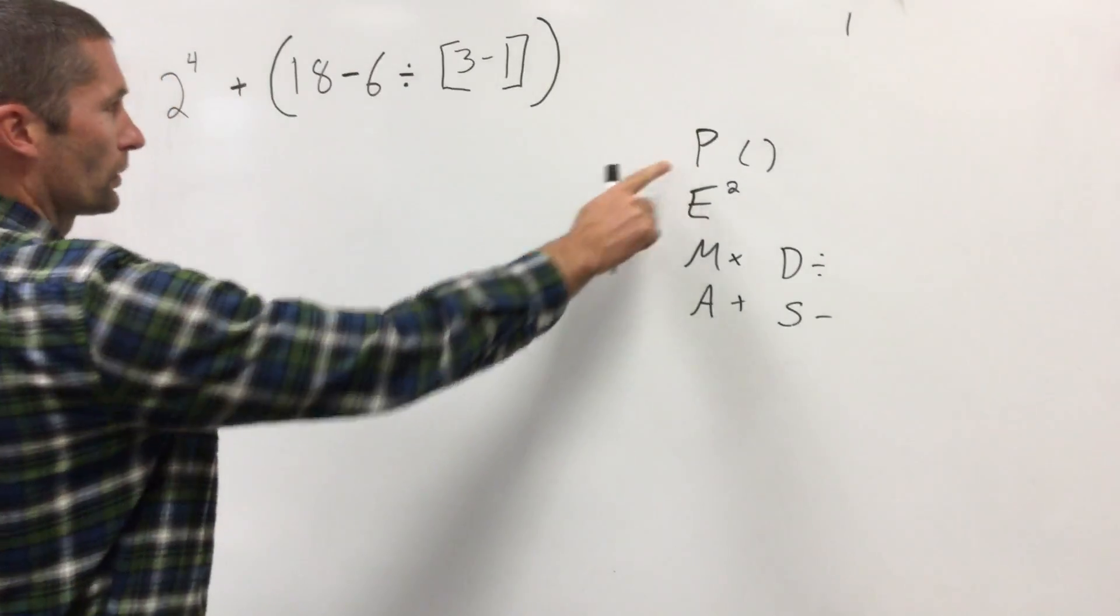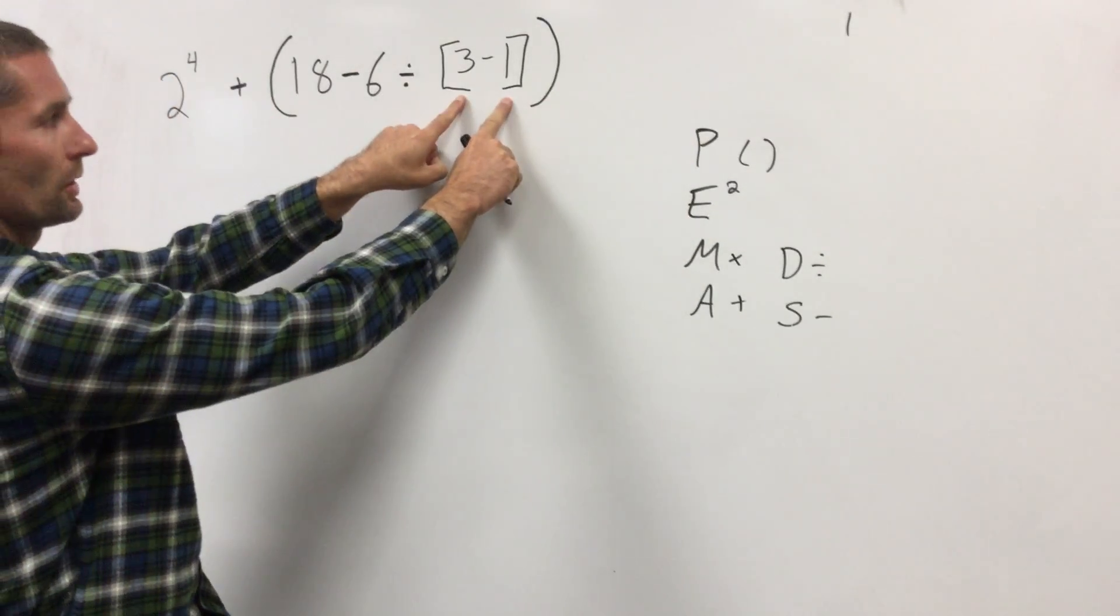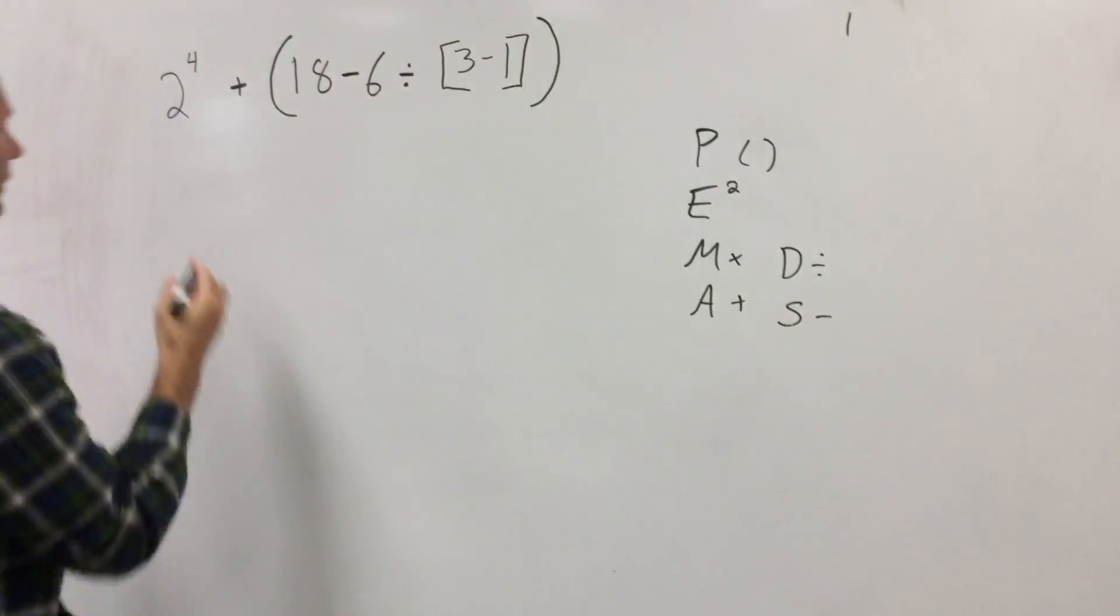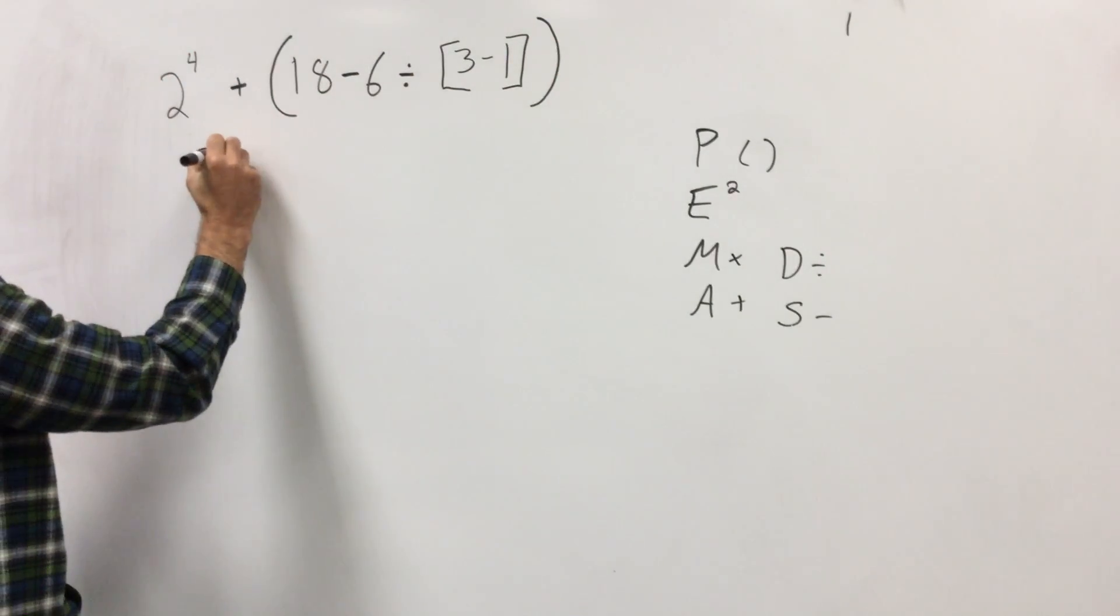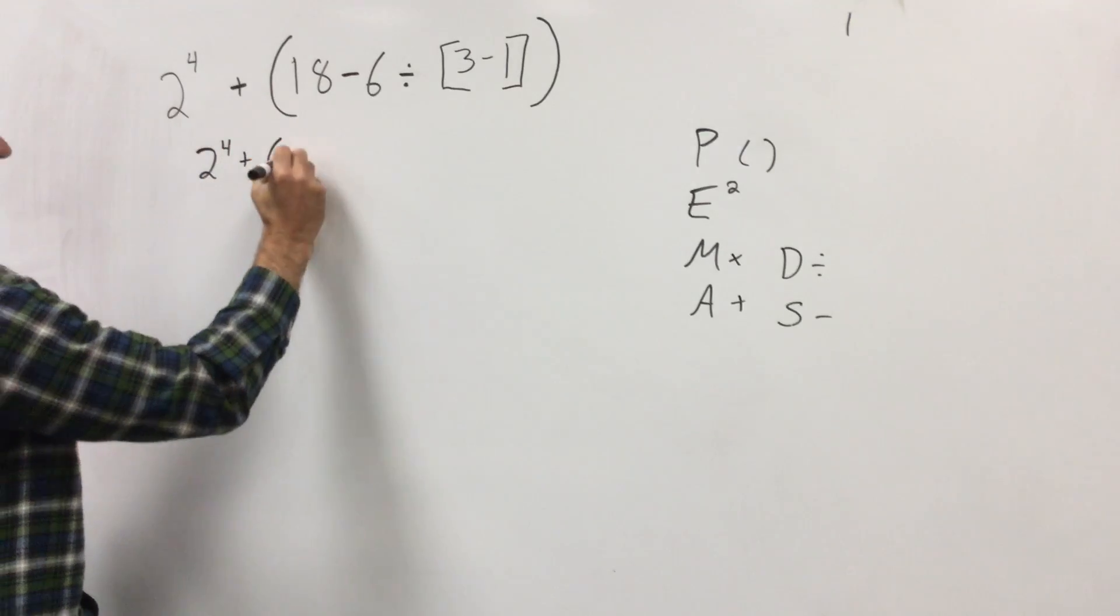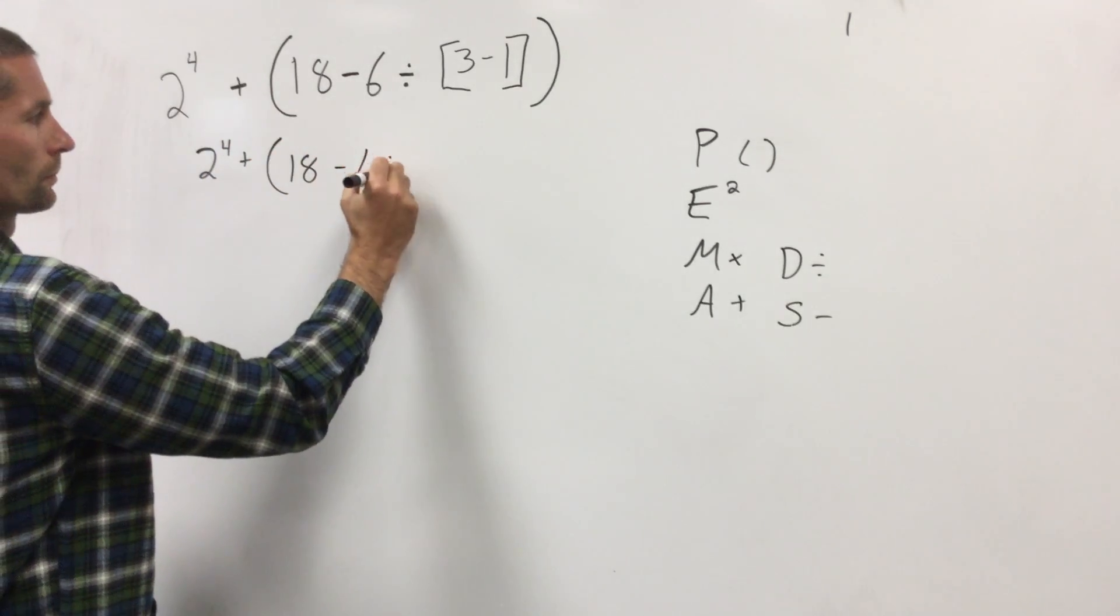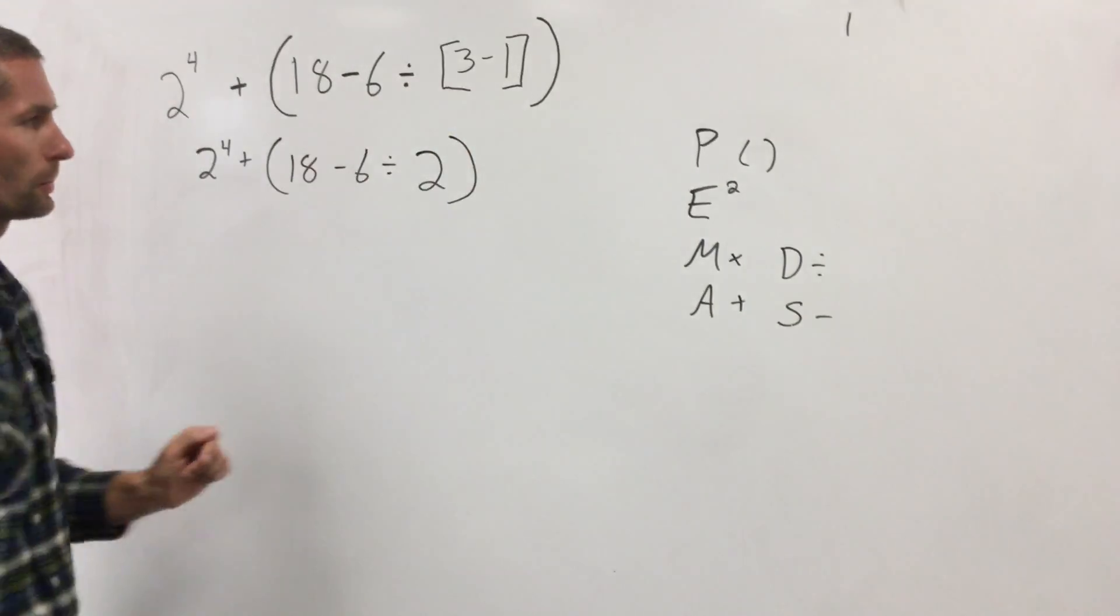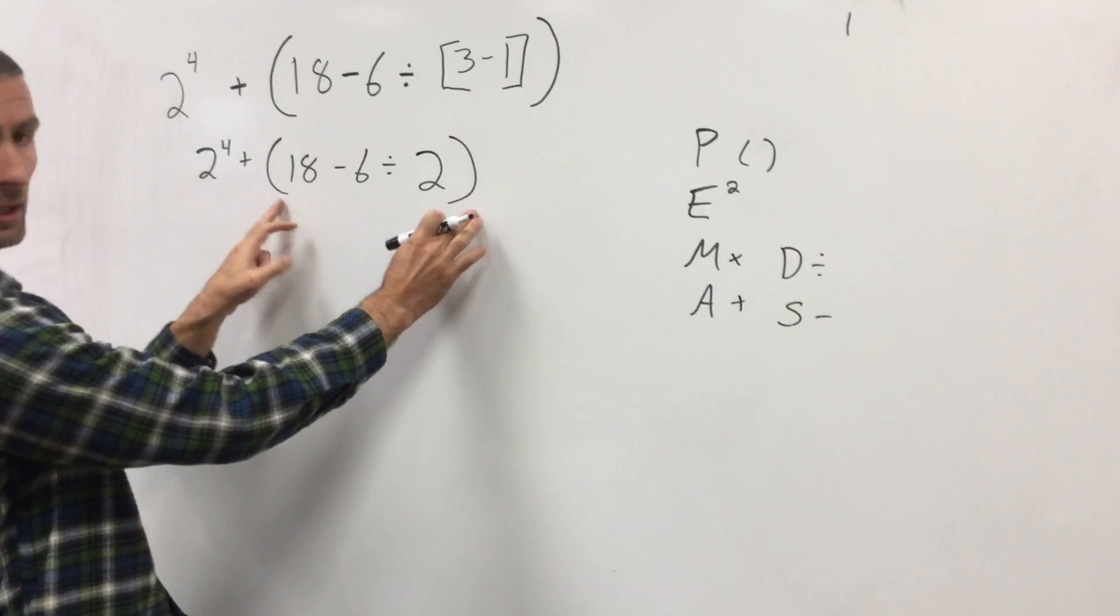So let's go through the steps. First, parentheses. We actually have two sets of parentheses, so we got to do the inner set first, then we'll do the outer. So I want to rewrite this one step at a time. Three minus two is two. Okay, so now we got rid of those parentheses, now we got to do these parentheses.